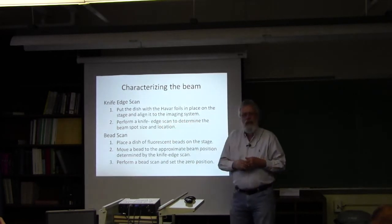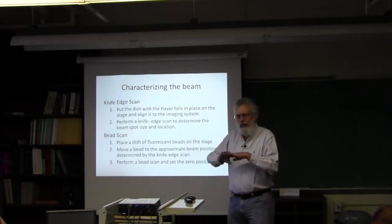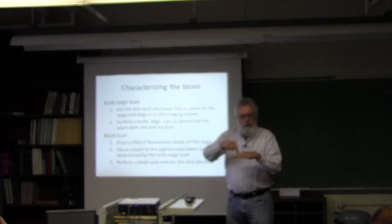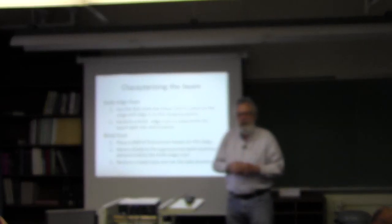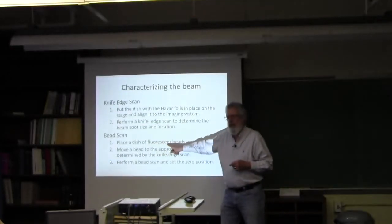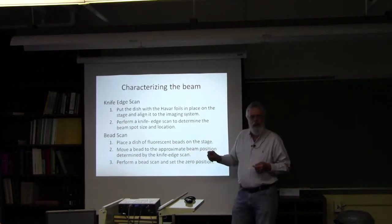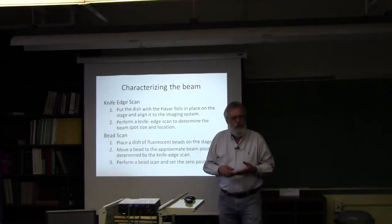You do that in each direction, and that gives you the spot size and its location. Then what you can do is look down your microscope, you put it in the location that was found here, you look down the microscope and you say that cross point is where the beam is. Then you put another dish on that has fluorescent beads in it. These are things you can see with our fluorescent microscope, but when a particle goes through, energy is lost.